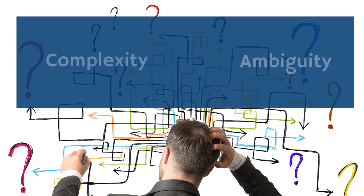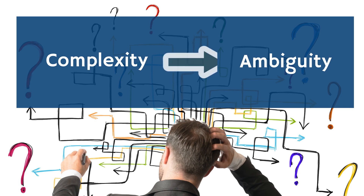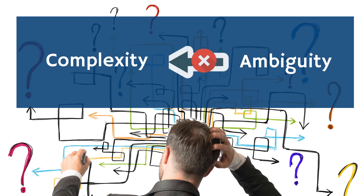Notice that there is some overlapping between complexity and ambiguity. Complexity usually causes ambiguity, but the opposite is not necessarily true.